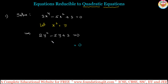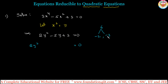The RHS is 0. On the LHS there are two factors. So 2y squared: the y squared coefficient is 2 and constant is 3, so 2 times 3 is 6. We have to split 6 into two parts such that by adding them we get minus 5. So minus 3 and minus 2: minus 2 times minus 3 is plus 6, and minus 2 plus minus 3 gives minus 5.